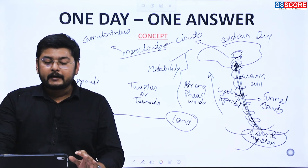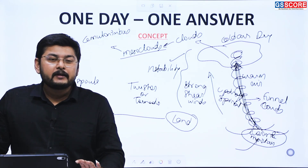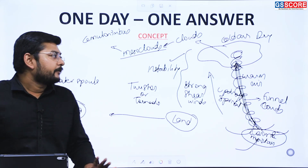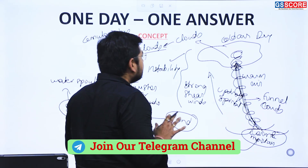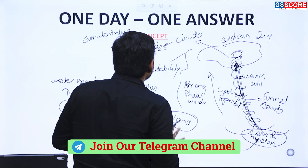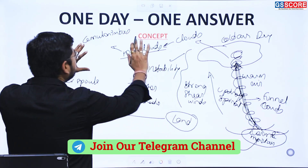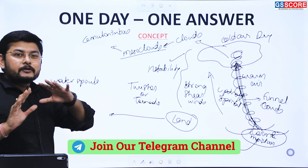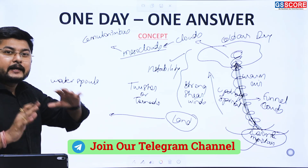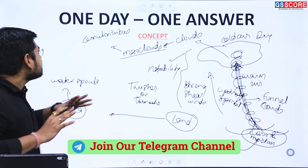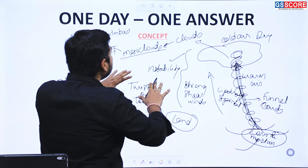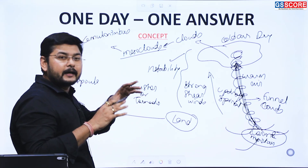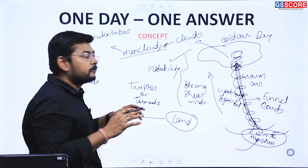Now, if we look at the stages of formation of the twister and how to write this in the answer — the first conceptual part was what is a twister, and the second conceptual part is why twisters are generally found near and around the Gulf of Mexico.